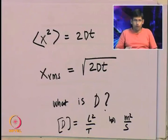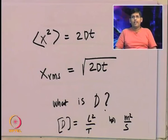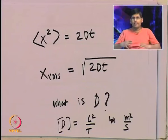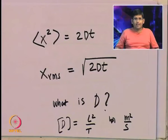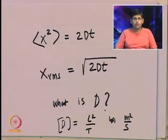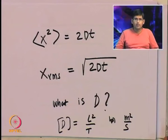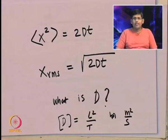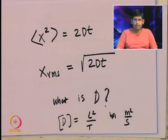D is the diffusion coefficient. It contains the properties of the medium in which the particle is diffusing — for example, in water, it contains the viscosity of the water and the temperature. If the temperature is very large, things will diffuse faster — higher temperature means higher diffusion coefficient. All the information about temperature, viscosity, and medium properties is encoded in this single quantity D.